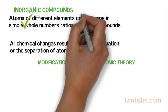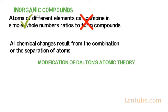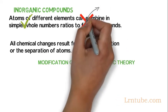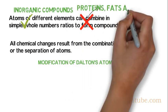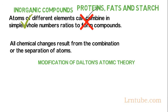But carbon forms very large organic compounds called proteins, fats and starch which contain thousands of atoms. Because of this, we can no longer see simple whole number ratios.